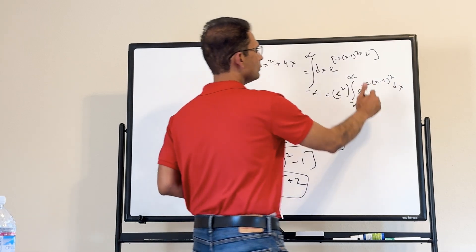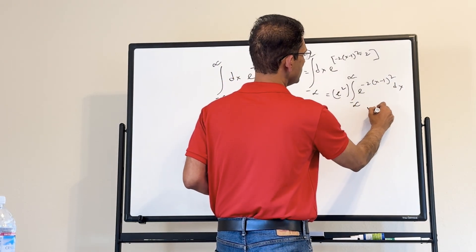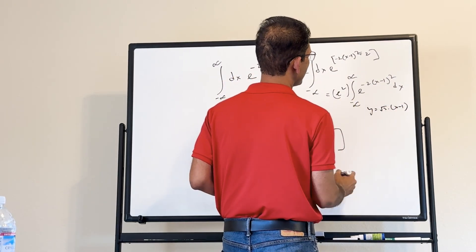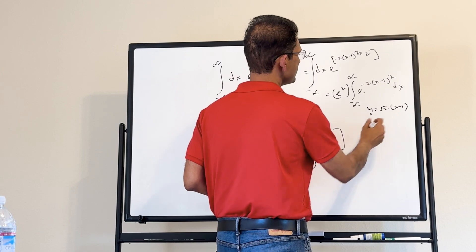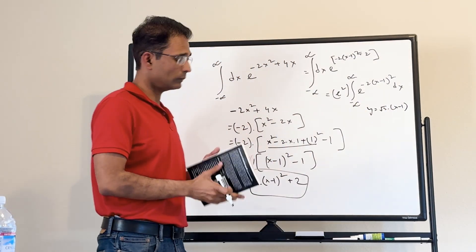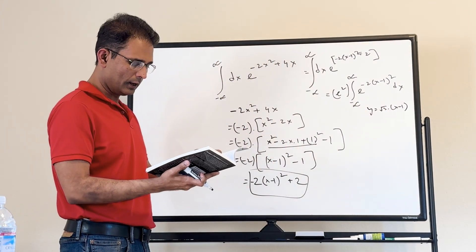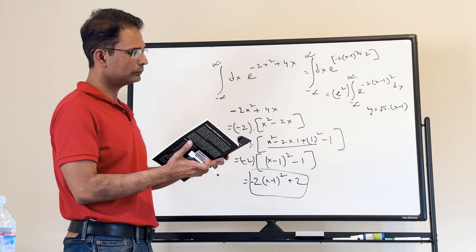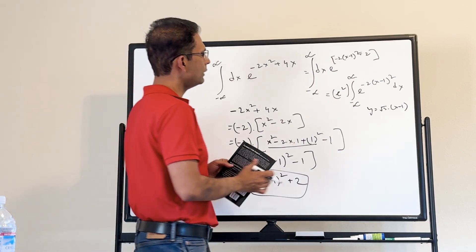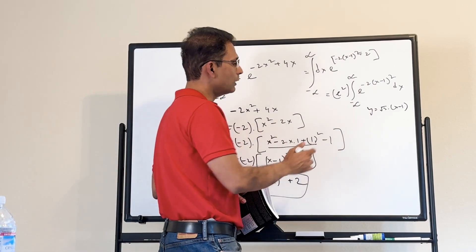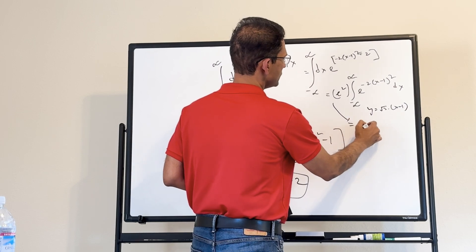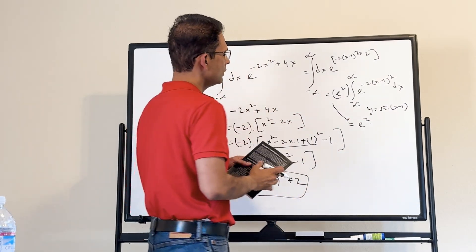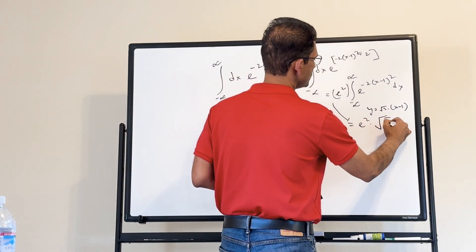We can evaluate this remaining integral by the substitution y equals square root of 2 times (x minus 1). Carrying out the integration using our basic formula, the final result is e squared times square root of pi over 2.